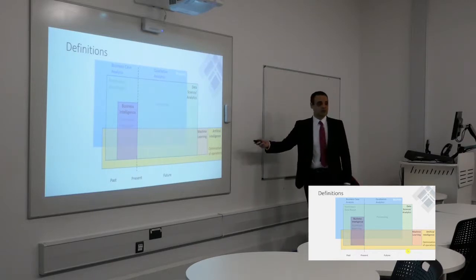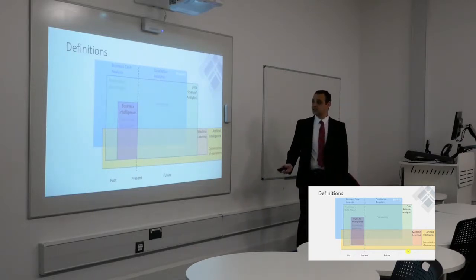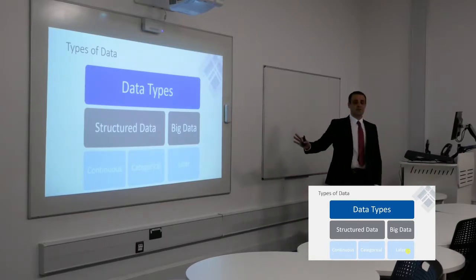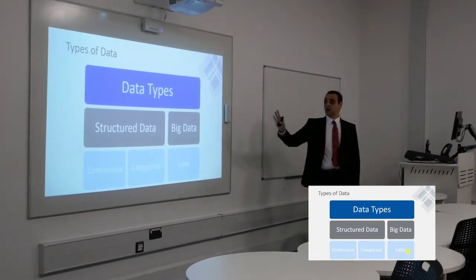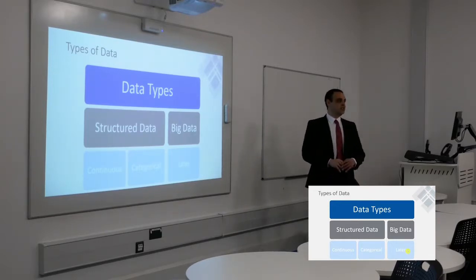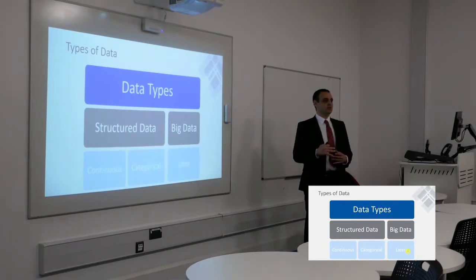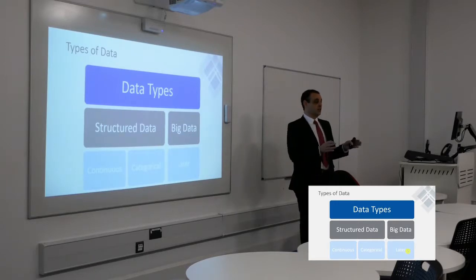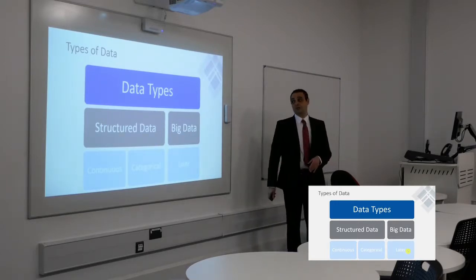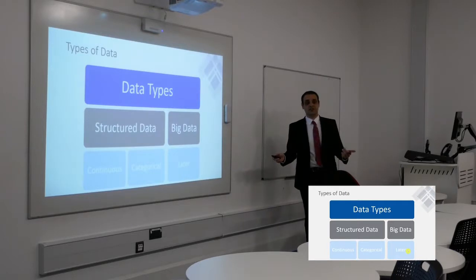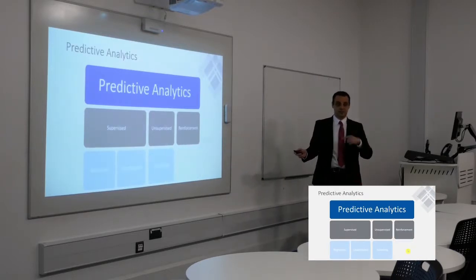Regarding data types — we have structured data, which is the traditional sort: tables, spreadsheets, or any data structured in columns and rows representing quantifiable information. Then big data, which is unstructured data, defined by five dimensions which we'll discuss in a moment. Predictive analytics covers anything beyond the present line and has three main types: supervised, unsupervised, and reinforcement learning.